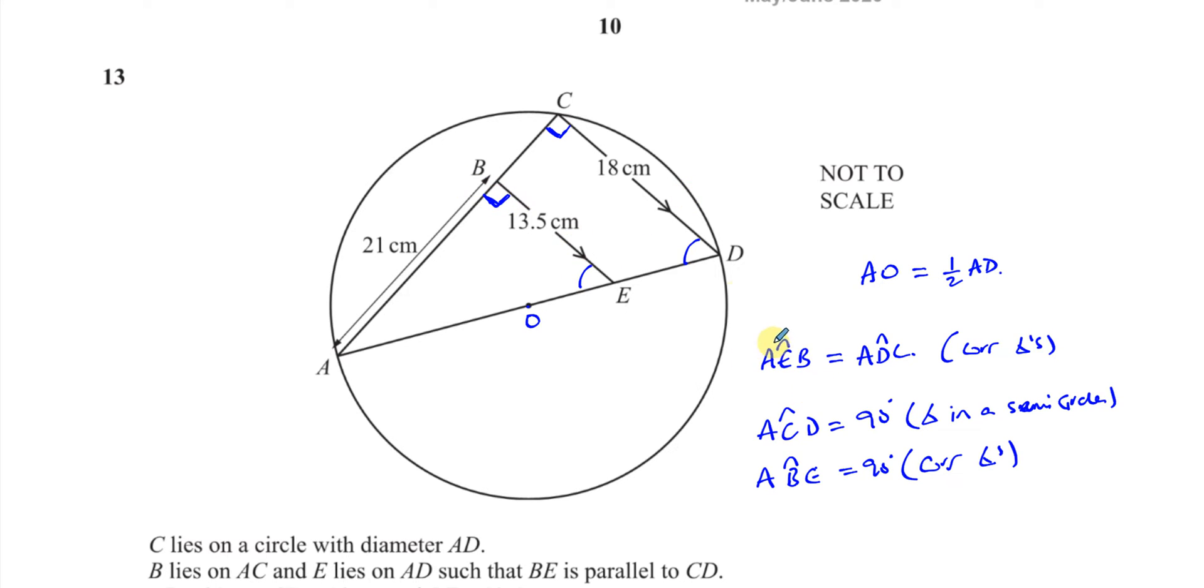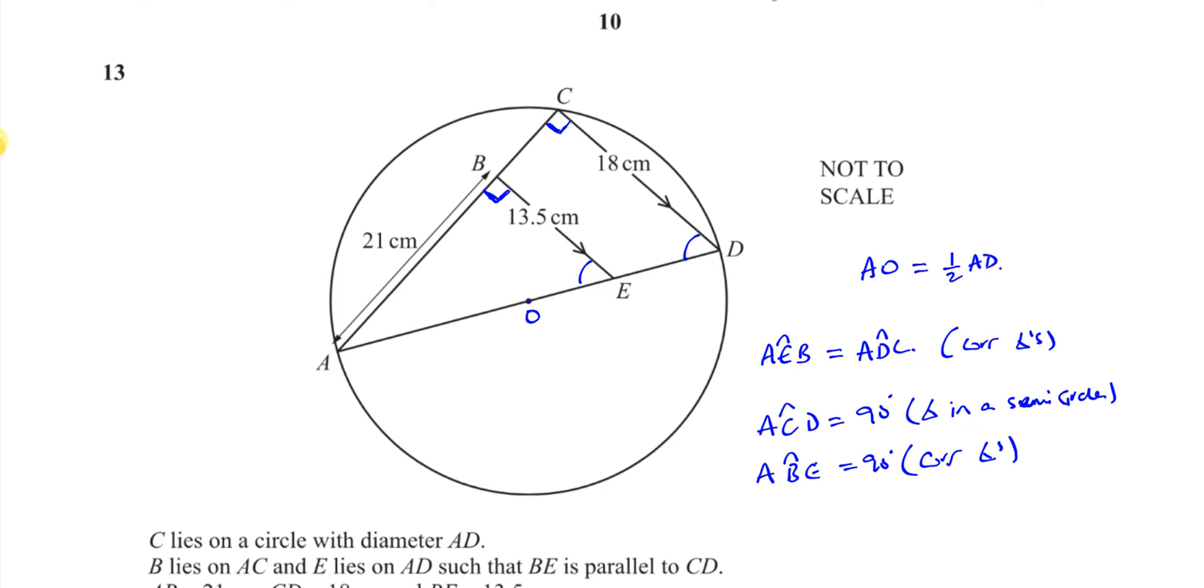Okay, so these two definitely are similar triangles because we know that two of the angles are the same. Of course, the third one is a common angle, A. So they're similar. So we can use similarity to find some of these lengths.